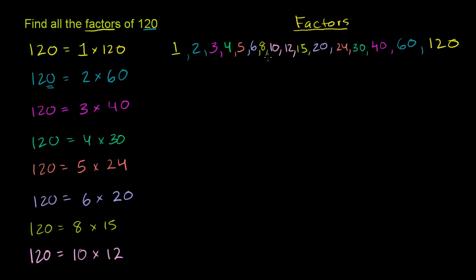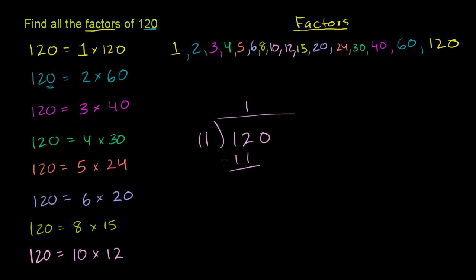We have one number left to check: 11. We don't have to go above 11, because we already went through 12, and we're filling in all the gaps going in descending order. Let's try 11: it goes into 12 one time, 1 times 11 is 11, subtract — you get 1, bring down the 0. 11 goes into 10 zero times, 0 times 11 is 0 — you're left with a remainder of 10. So 11 does not go in evenly.